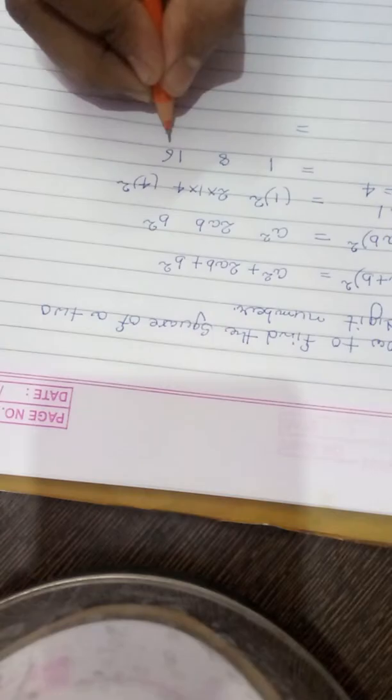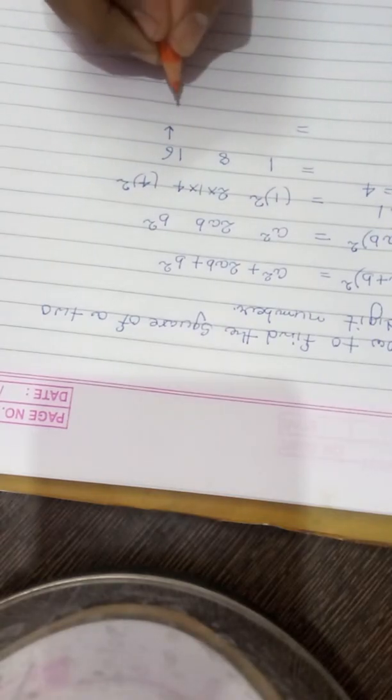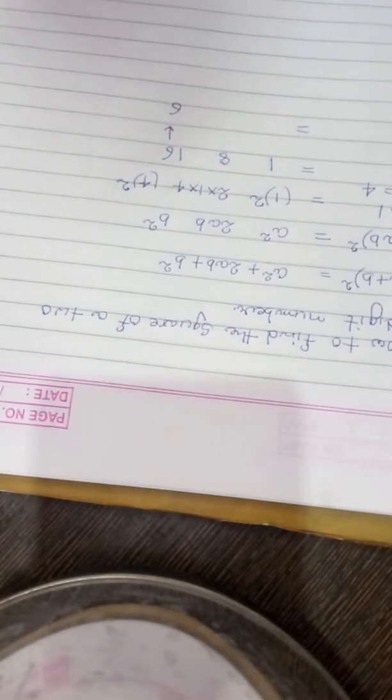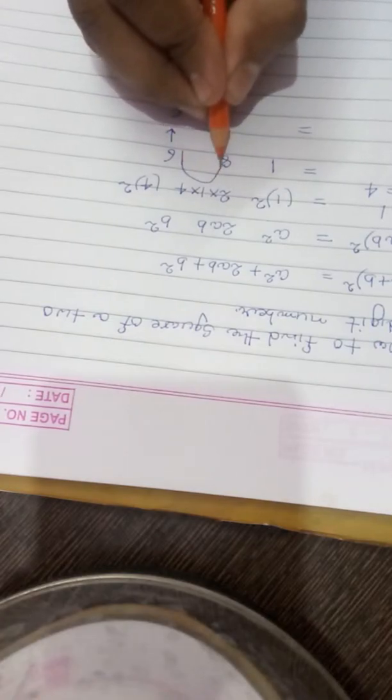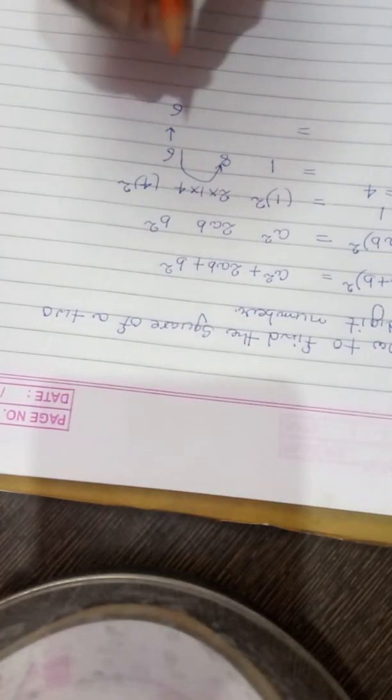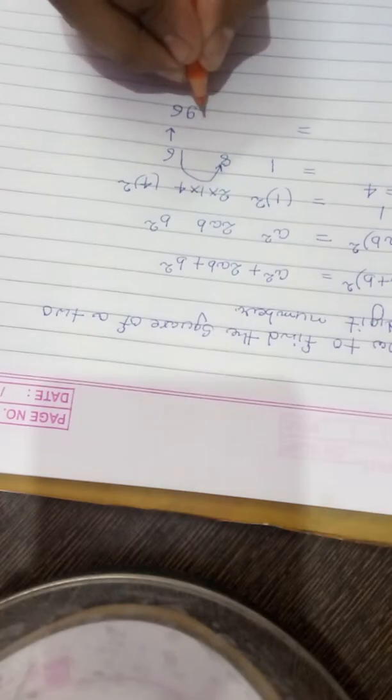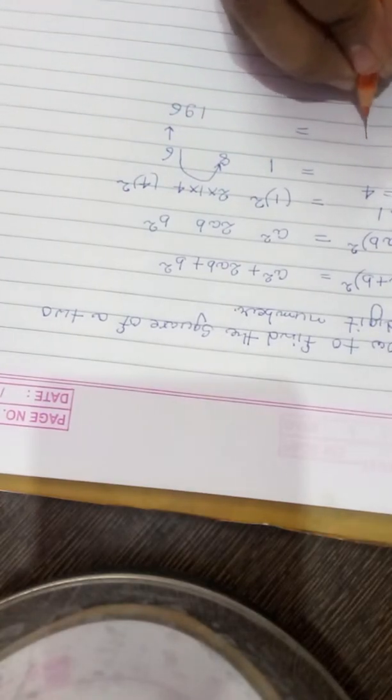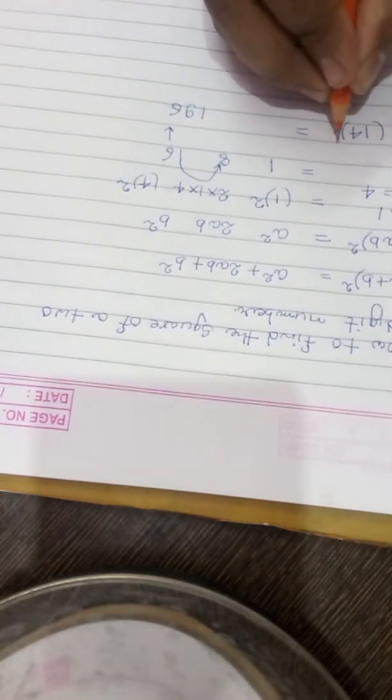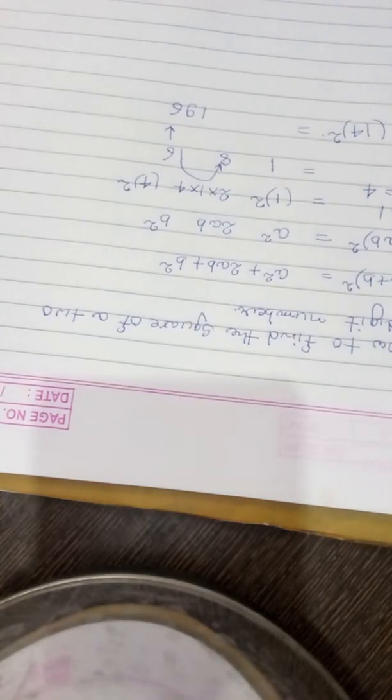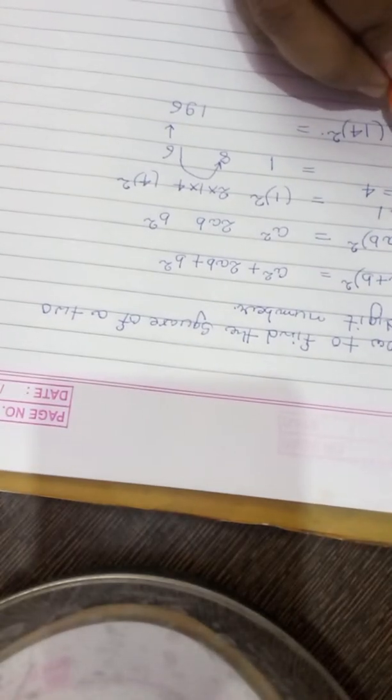Now write this 6 as it is in the unit place. Add this 1 with 8, so this is 9, this is 1. That is all—14² is 196. So this is as simple.